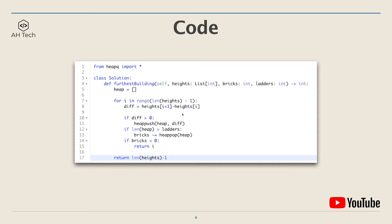The code is pretty short and clean. First, create a heap data structure, then go through the array. Calculate the height difference at the current point. If the height difference is bigger than zero, we have to use either bricks or ladders — first just push the height difference into the heap. If the length of the heap is bigger than the number of ladders, we have to use bricks, so we subtract the smallest height difference from bricks. If we run out of bricks, the furthest building we can reach is the current index i. If we reach the end, we return the length of heights minus one.